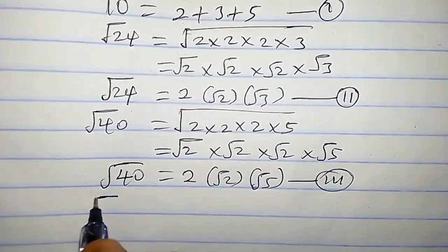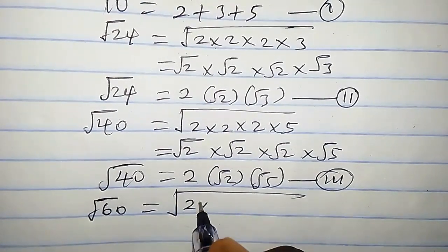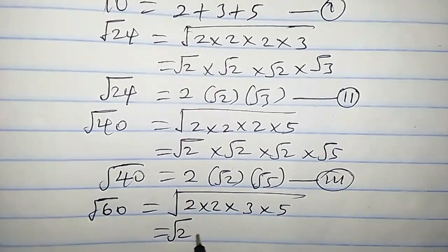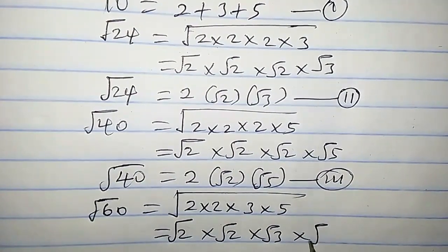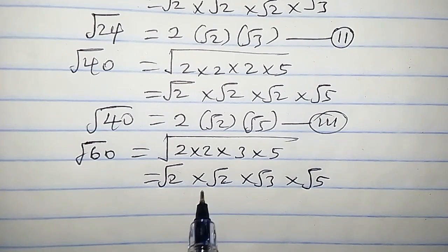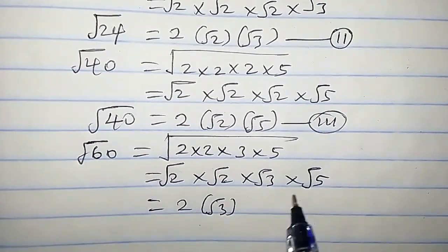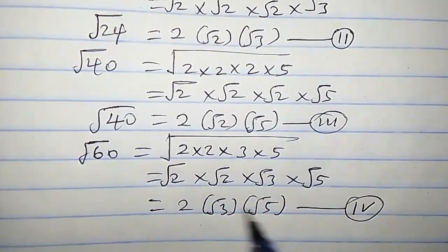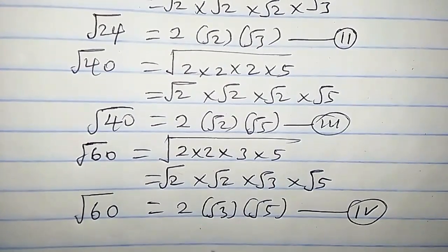Now for square root of 60, we have √60 equals 2 times 2 times 3 times 5, which can also be written as √2 times √2 times √3 times √5. Then √2 times √2 is √4, and √4 is 2. So we have 2 times √3 times √5. Let's call this equation 4, which is square root of 60.